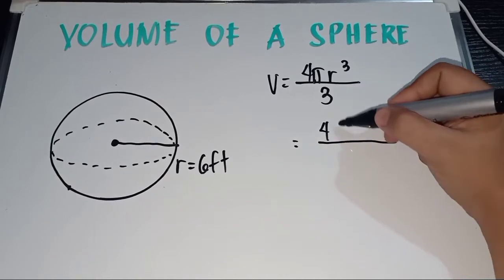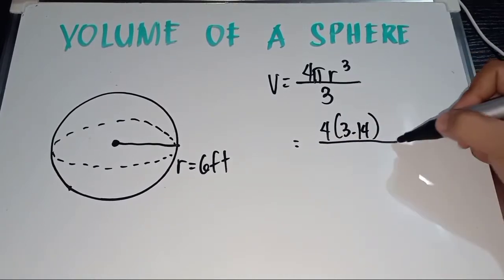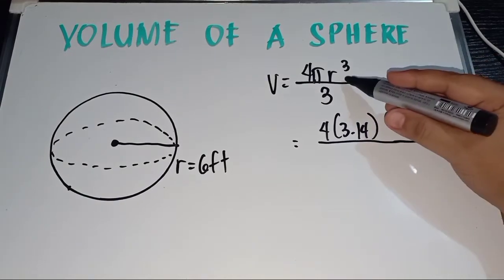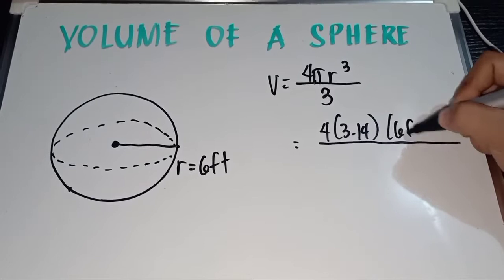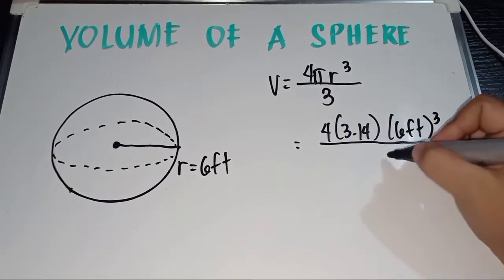4 times the value of pi which is 3.14 times r cubed. r is 6 feet cubed all over 3.